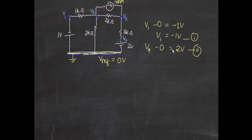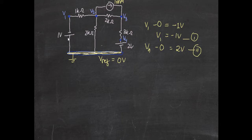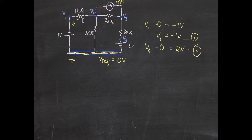We already have the values for v1 and v4 directly from the voltage sources — we can't really call them equations, since they're just known node voltages. Now let's move on to the actual equations for nodes v2 and v3. For node 1, since we already know v1 is minus 1 volt, we don't need to write an equation for it. I'm taking the current direction as leaving each node for consistency.